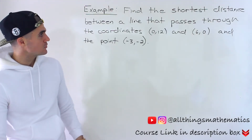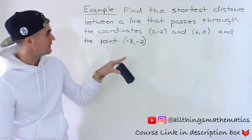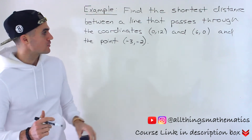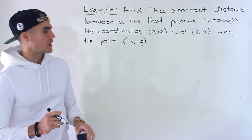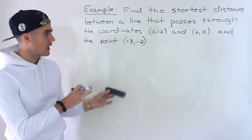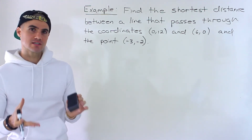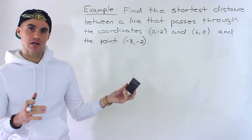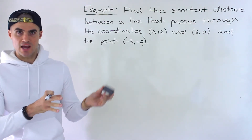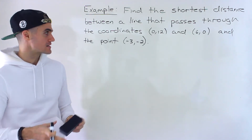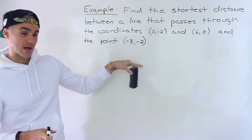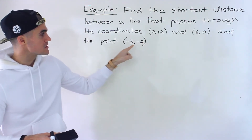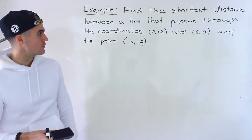Patrick here, and moving on to the next example: we've got to find the shortest distance between a line that passes through the two coordinates (0, 12) and (6, 0), and the point (-3, -2). This is another example dealing with the shortest distance between a line and a point. I've gone through a bunch of examples on the website before this one, covering the general steps in the overview video, so I'm going to be following those exact same steps.